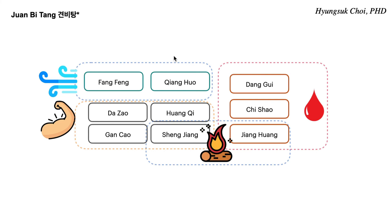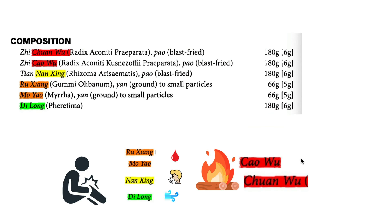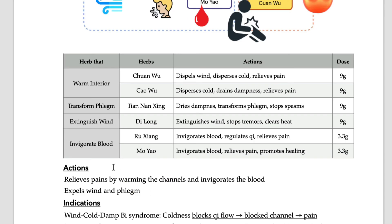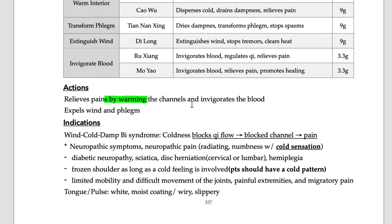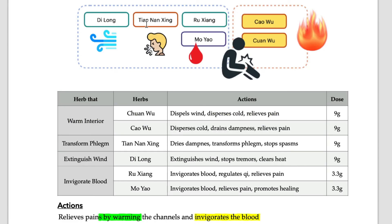Each formula has a specific target. Xiao Huo Lo Dan treats excessive coldness — especially considering its blood stasis herbs, phlegm herbs, and wind herbs, this formula is for excessive coldness. The main actions are: relieves pain by warming the channels, invigorates blood, and expels wind and phlegm. Di Long addresses wind, Nan Xing addresses phlegm, Ru Xiang and Mo Yao address blood stasis, and Jia Wu and Chuan Wu treat excessive coldness.